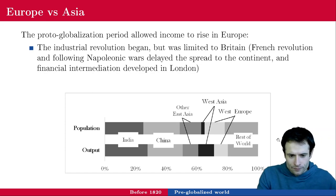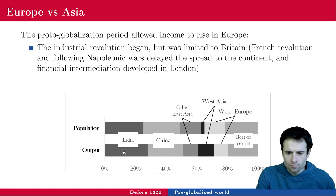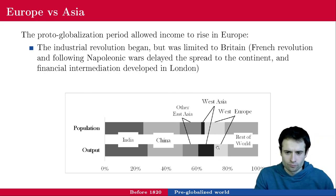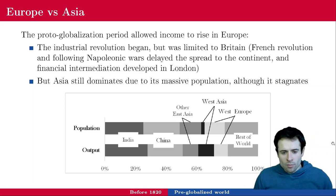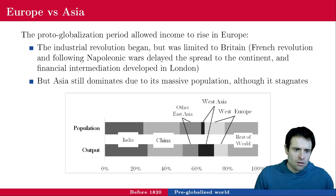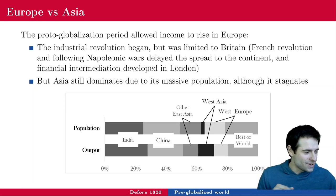Looking at population over time and output shares, India and China were pretty much dominating. Europe had some progress going on, but population was still relatively low compared to India and China. So in terms of world GDP share, Asia still dominated.